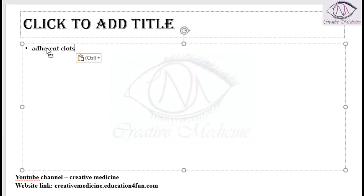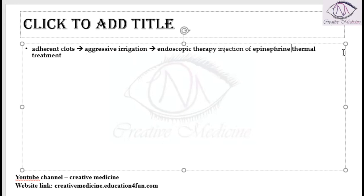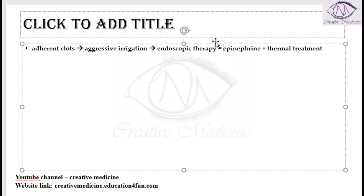What about adherent clots? Adherent clots are mainly treated by aggressive irrigation. First you should aggressively irrigate the area, followed by endoscopic therapy. In endoscopic therapy, an injection of epinephrine is given along with thermal treatment for adherent clots.